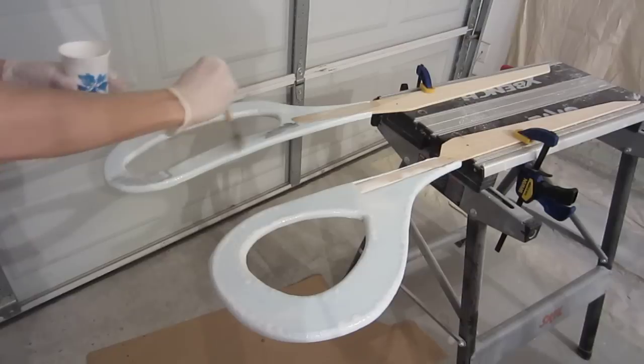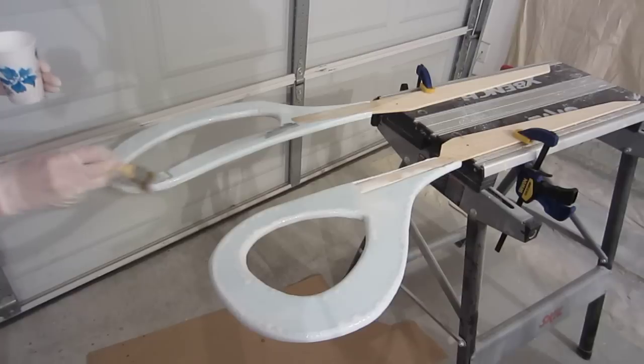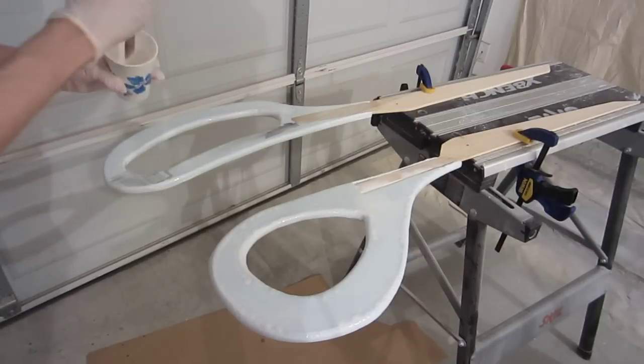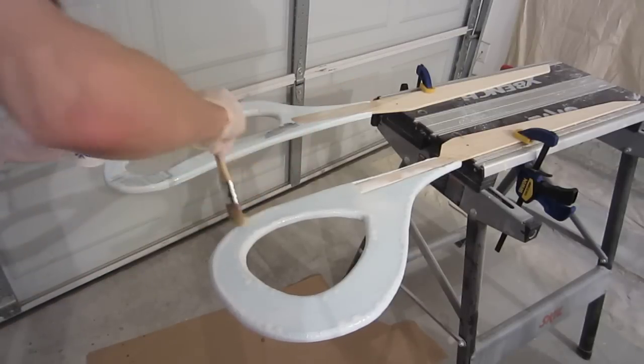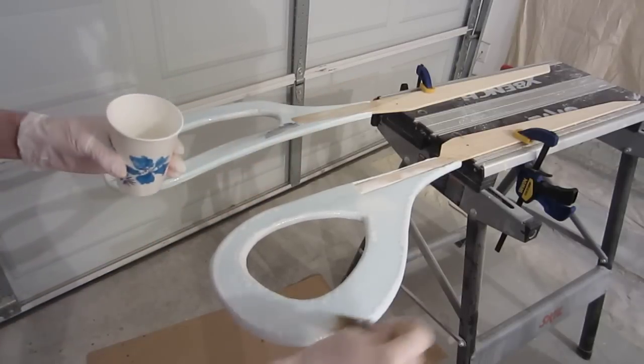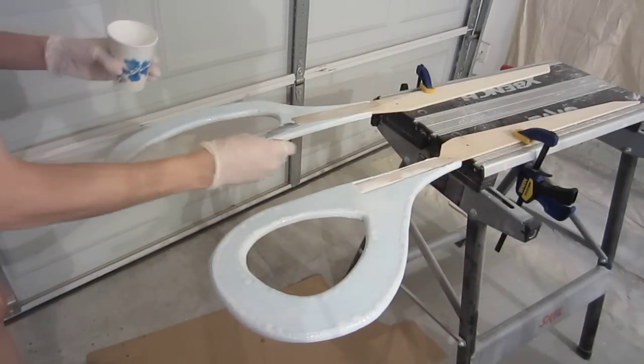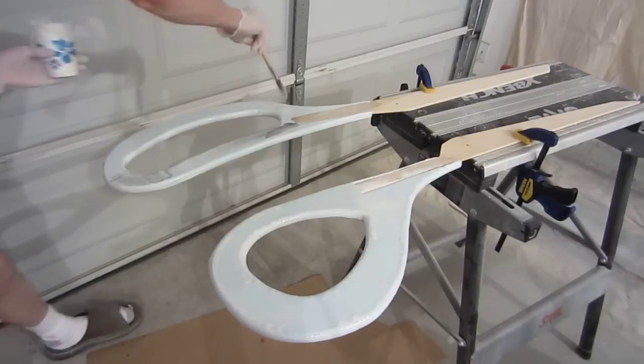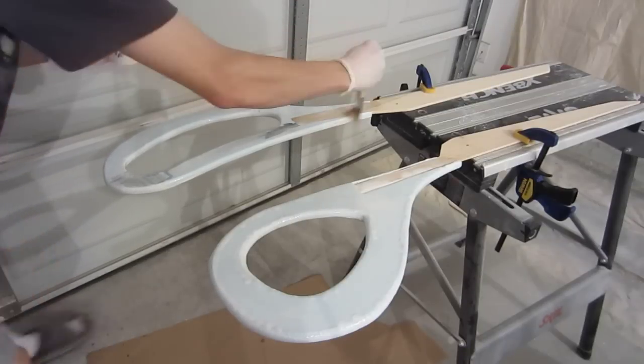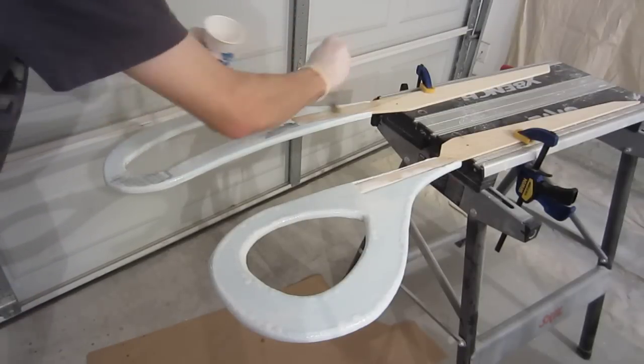And as you can see I have some brown paper laying on the bottom because this is dripping and I don't really want it all over my floor because it's a bit difficult to clean up once it's dry solid. So I'm just getting all the edges and surfaces coated well enough.